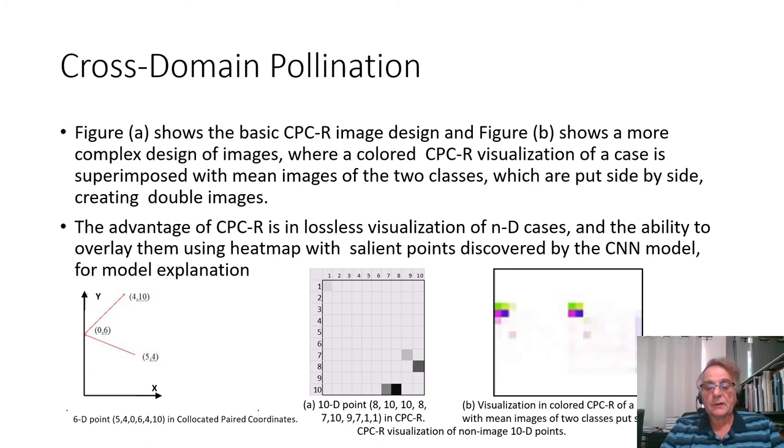Figure A shows the basic of CPC image design and figure B shows a more complex design images where we superimposed image with the new images of two classes, which put side by side, creating double images and presenting the context. The advantage of this algorithm is lossless visualization of n-D cases as 2D images and the ability to overlay them using heat map with a salient point discovered by CNN algorithm for model explanation. Of course, I don't have much time to talk about detail of this algorithm, but we have a presentation at this conference about detail of this approach. So welcome to that presentation.